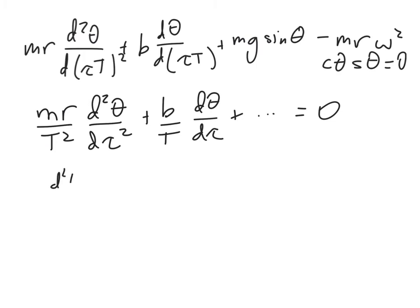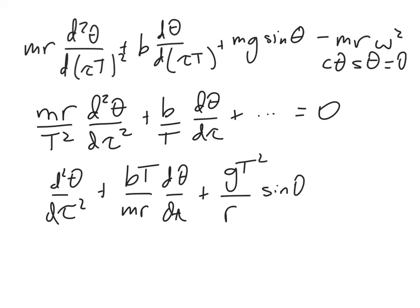So I get d²θ/dτ² plus bT/mr dθ/dτ plus gT²/r sin θ minus ω²T² cos θ sin θ is equal to zero. And now note that every single term is now nondimensional.